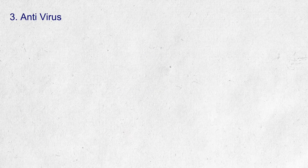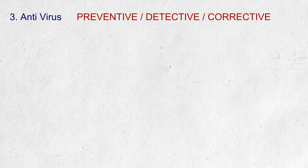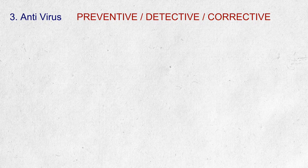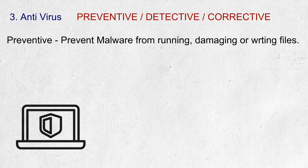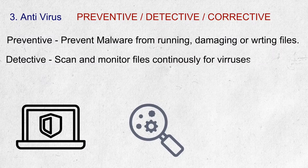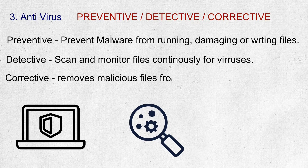Antivirus software can be a preventive control, but it is also a detective control and corrective control at the same time, depending on the function the antivirus is performing. Antivirus keeps the computer safe in the first place by preventing malware from running, damaging, or writing files — acting as a preventive control. It also scans and monitors files on the computer continuously for viruses, making it a detective control. Antivirus also removes malicious files from the system once detected, acting as a corrective control.